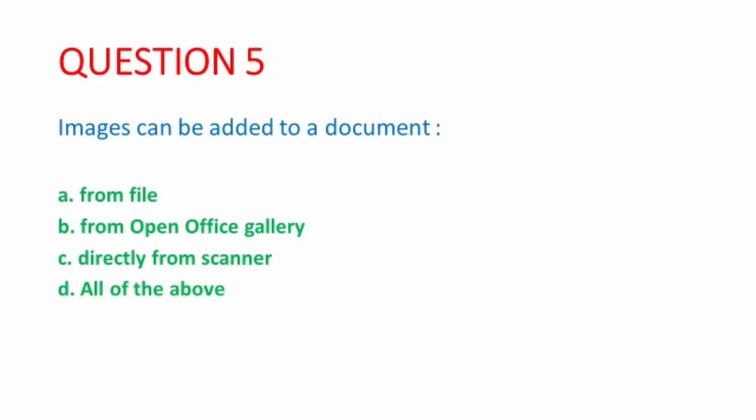Next MCQ, again from the unit Digital Documentation Advanced. Images can be added to a document from file, from OpenOffice gallery, or directly from scanner. So all these three options are correct. So the correct option is all of the above.